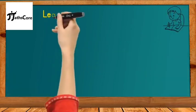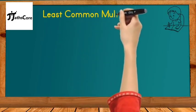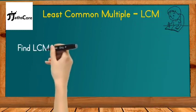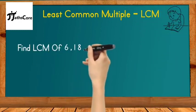Let's solve the first example on least common multiple. Find LCM of 6, 18, 36, and 72.